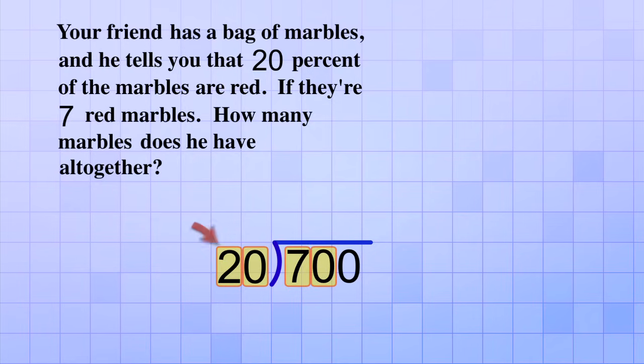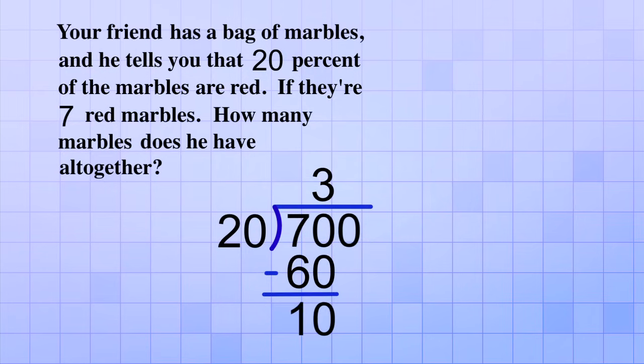Now we ask, how many 20s does it take to make 70 or almost 70? Well, that would be 3 because 3 times 20 is 60. 70 minus 60 leaves 10 as the remainder, and then we bring down the zero,